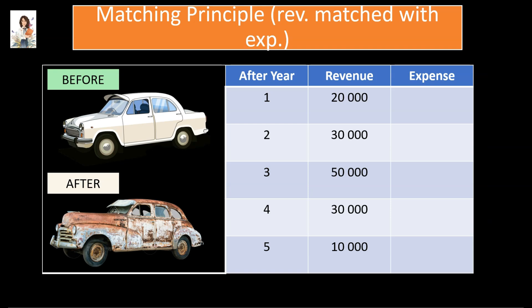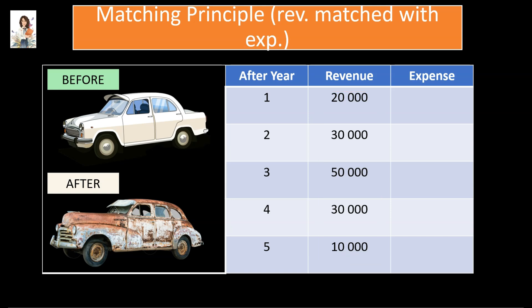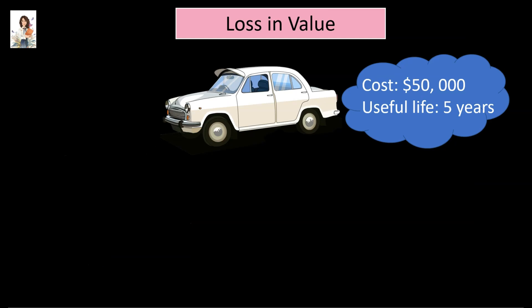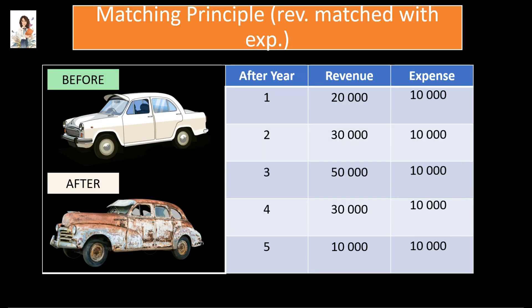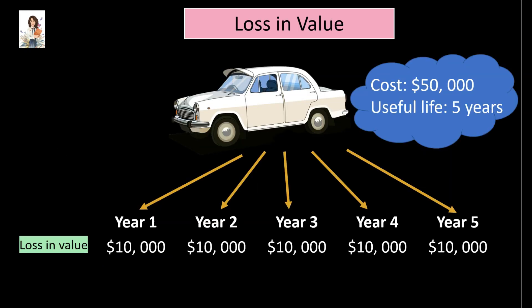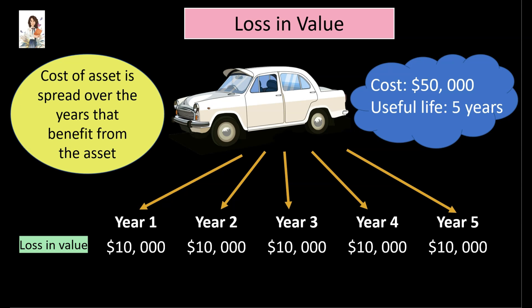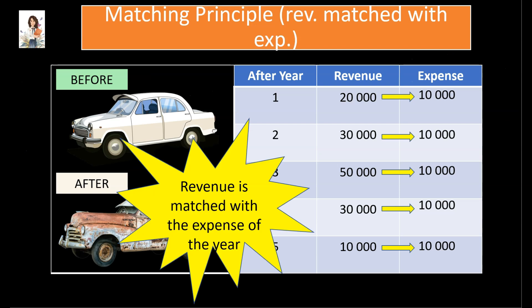Let's see how the matching principle is applied while charging depreciation. If a business purchases a car costing $50,000 with a useful life of 5 years, the car will generate revenue for the business for each of the 5 years. But as per the matching principle, revenue should be matched with expense of the same year. The car will lose value over its useful life, and assuming equal loss each year, the loss in value of the car is $10,000 per year. This loss in value is the corresponding expense for each of the 5 years. Therefore, revenue from the use of the car is matched with expense from the use of the car in the same year. The cost of the asset is spread over the years that benefit from its use, and revenue is matched with the expense of the year.